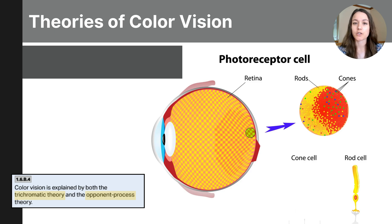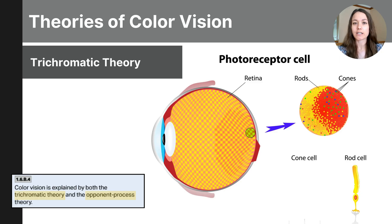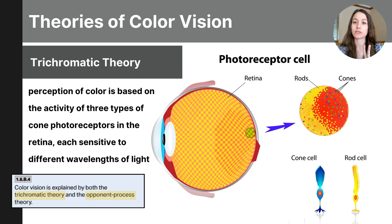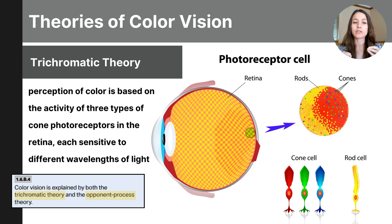There are two theories of color vision you need to be familiar with: the trichromatic theory of color and the opponent process theory. These theories build upon one another to help us better understand color vision. The trichromatic theory is based on the idea that we have three cone photoreceptors that are sensitive to different wavelengths of light. The first is sensitive to short wavelengths, helping us detect blue. The second is sensitive to medium wavelengths, helping our eyes detect green. The third is sensitive to long wavelengths, helping us detect red. A combination of cones that are active would allow us to see multiple colors and blends of different colors — for example, if the blue and green cones are strongly activated, this would help us perceive cyan.